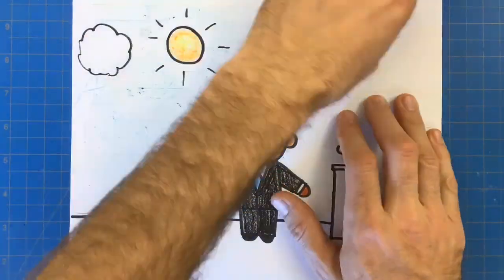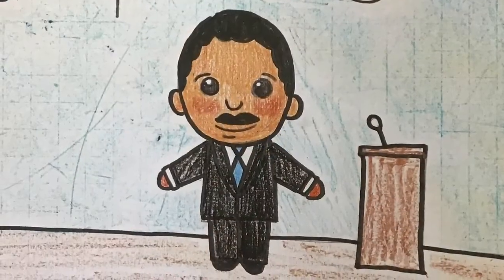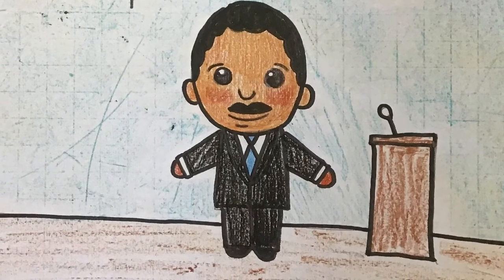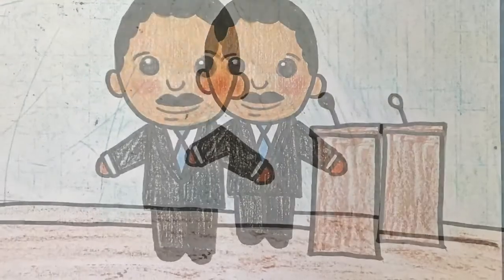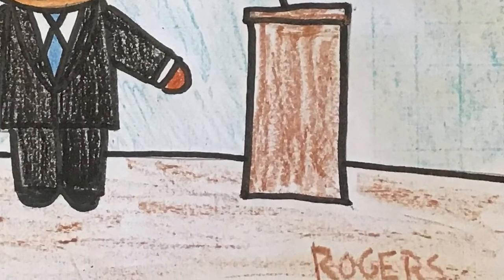Now I'll use my crayons to color in my sky. The sun, the stage, the podium. And there we have it. A cartoon illustration of Dr. Martin Luther King. Don't forget to put your name on your work. And send me a picture of what you made. Bye for now.